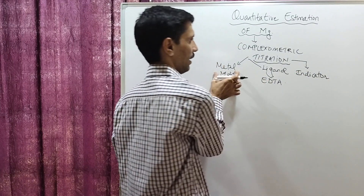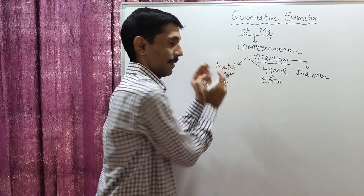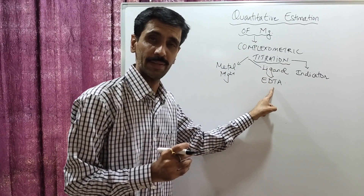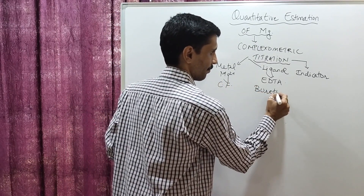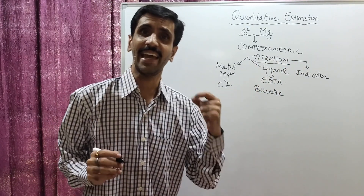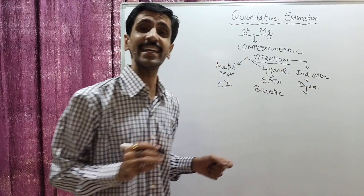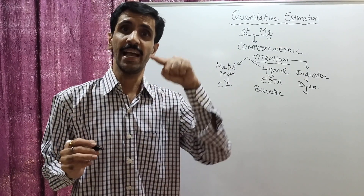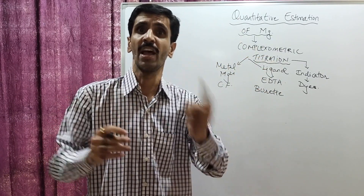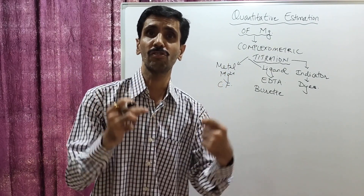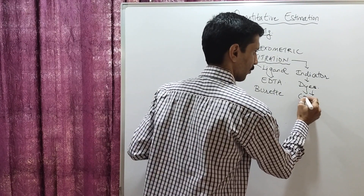When we talk about complex formation, we require a metal and a ligand with bonding between the two. The metal ion solution will be in a conical flask, and the ligand EDTA will be filled in the burette. An indicator consists of dyes — organic compounds that are colored — and at the completion of the reaction, it shows a visible change in color, indicating the end of the reaction.